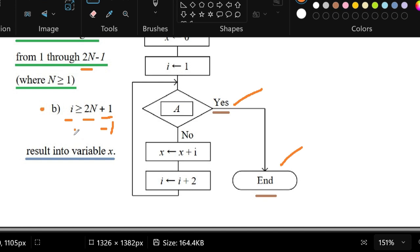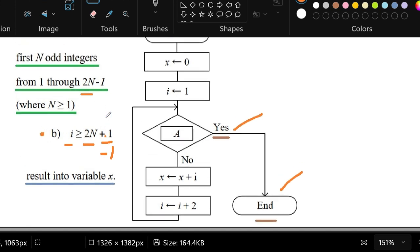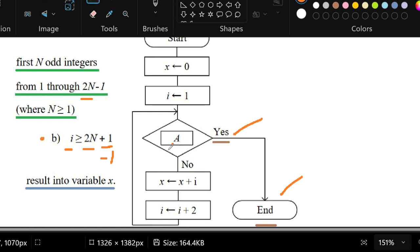Therefore, what we are going through in the condition, in this case the expression, is to count 1 through 2N minus 1, the odd integers, not the sum of the odd integers. That's why the correct answer is i instead of x in this case. And the final answer would be letter B.